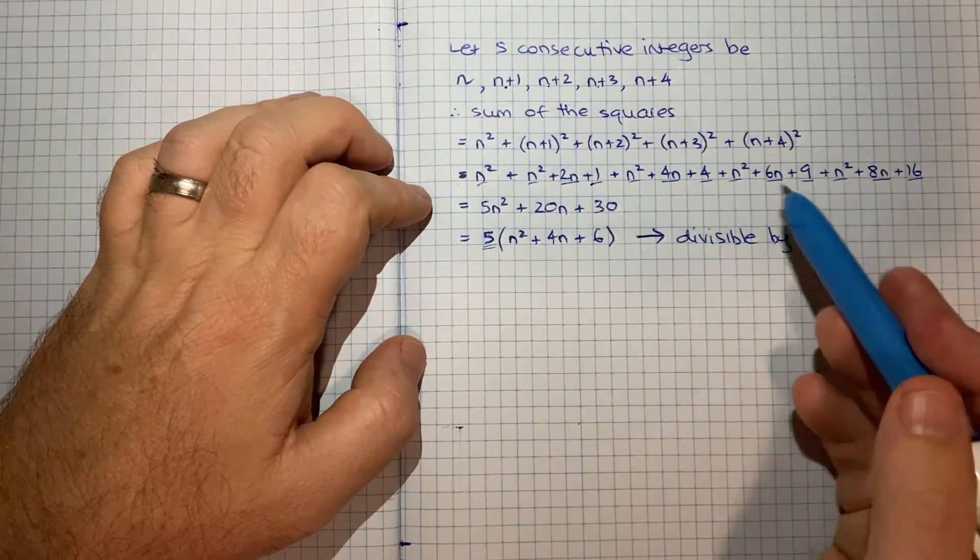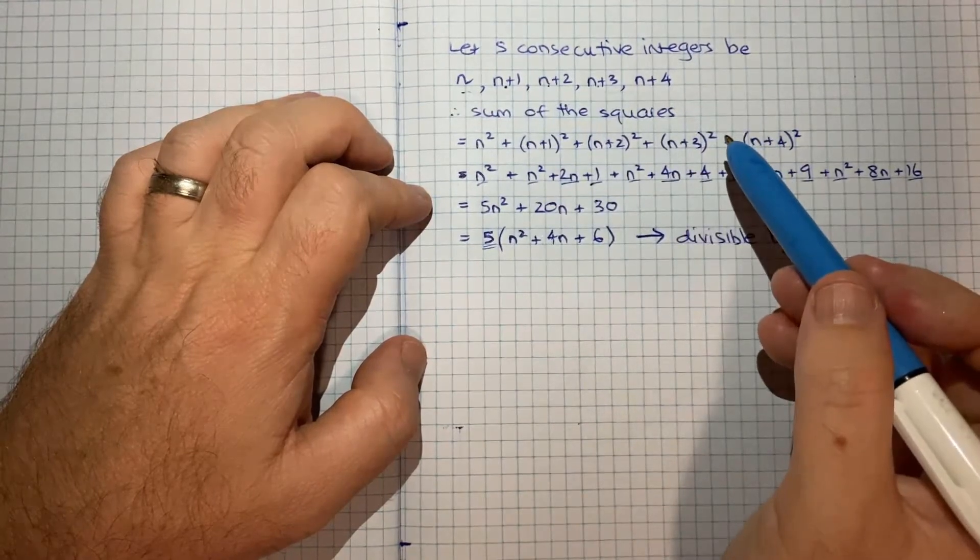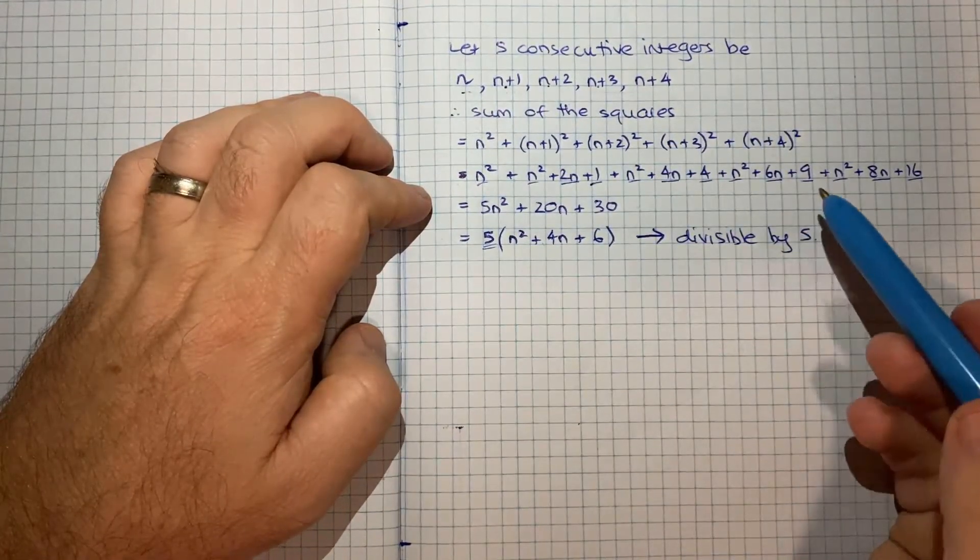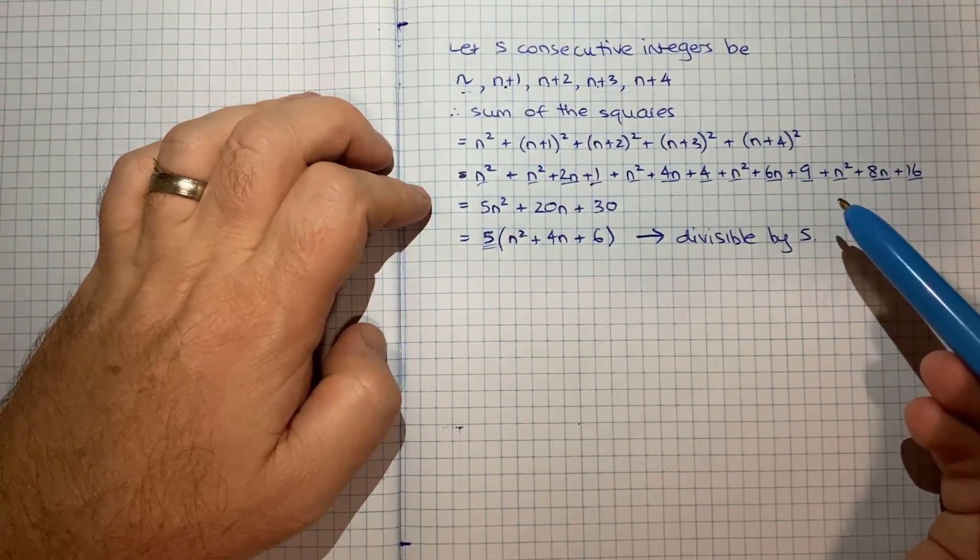But thankfully for this question, the key to it was simply defining those five consecutive integers. And then it all kind of fell out quite nicely. So hopefully you've been able to follow that and it's all made sense. And yeah, tick boom.